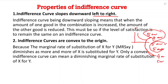Because of that, the indifference curve is downward sloping from left to right. The next property is that indifference curves are convex to the origin. Indifference curves are convex because of the diminishing marginal rate of substitution.